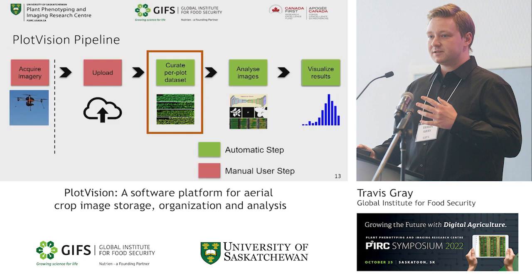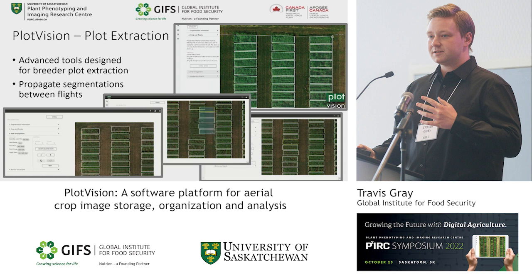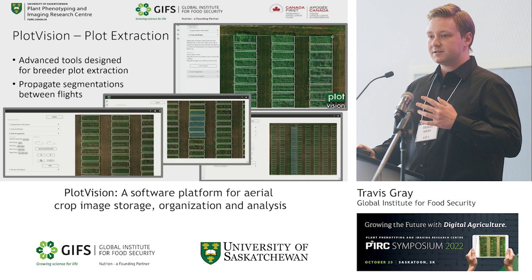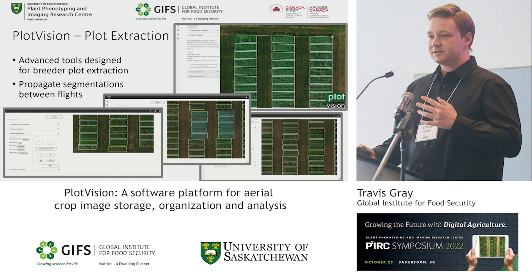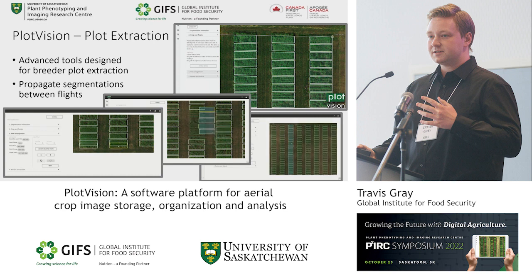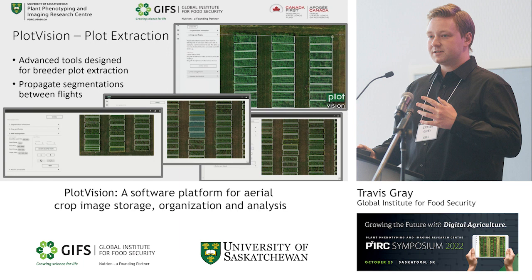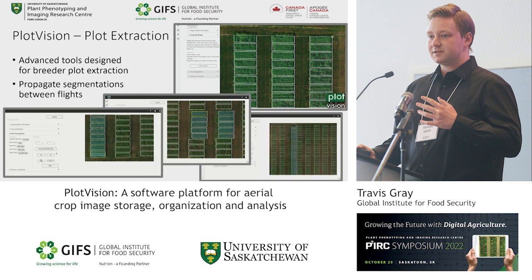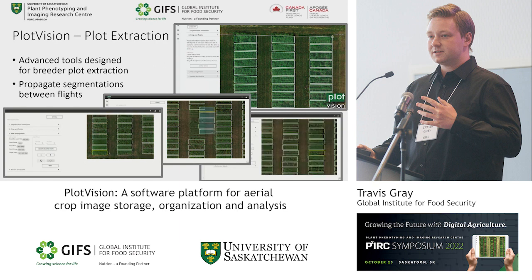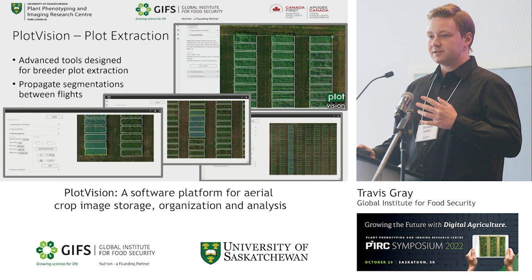The next stage after your mission has been stitched into an orthomosaic is to create the per-plot dataset. This is done through what we call plot extraction or plot segmentation. Instead of hand-drawing boxes onto each plot, we fill the orthomosaic with best guesses in a grid-like pattern and have worked hard to make tools for manual adjustment of microplots as easy as possible. After plots are extracted from a mission flight, every other mission in the same trial can also have that segmentation automatically propagated, meaning further segmentations later in the year can happen automatically.